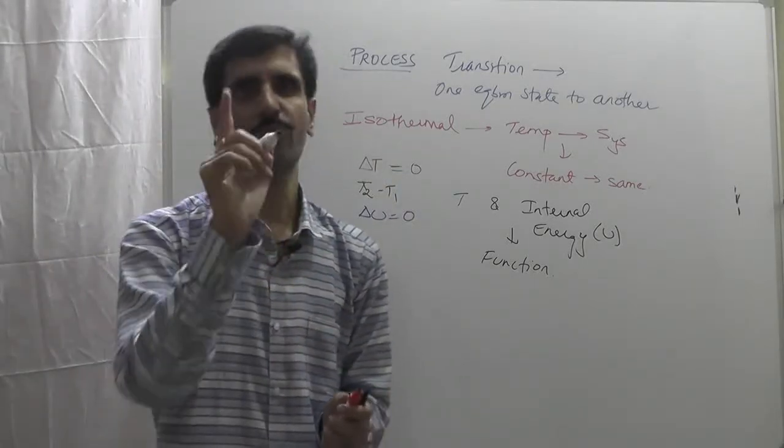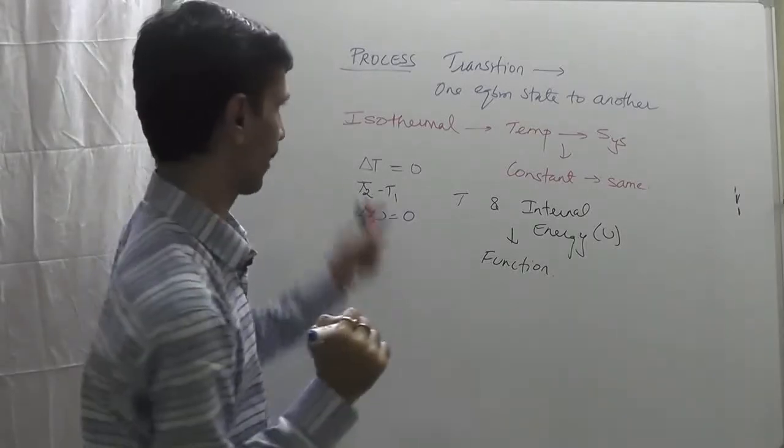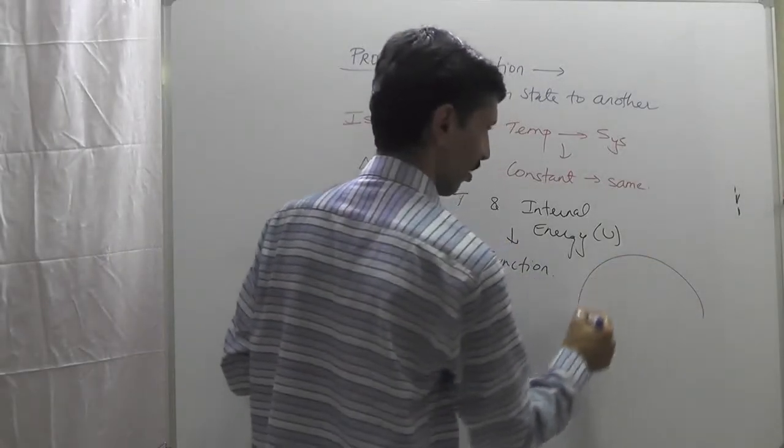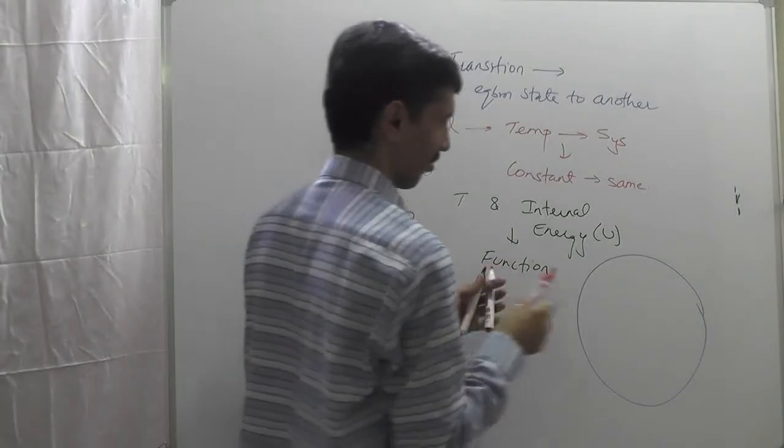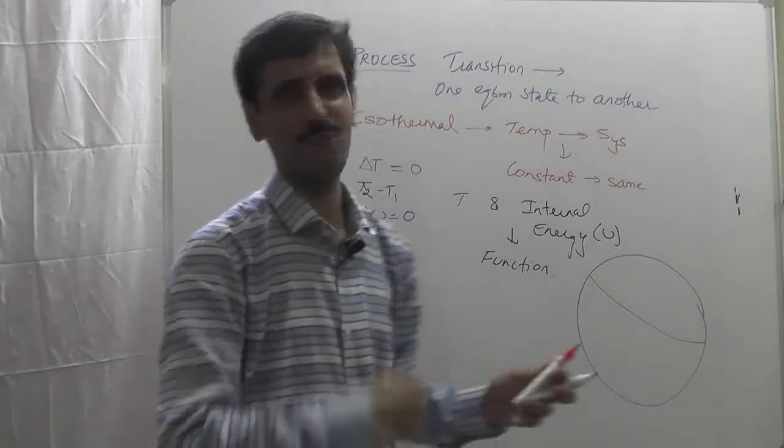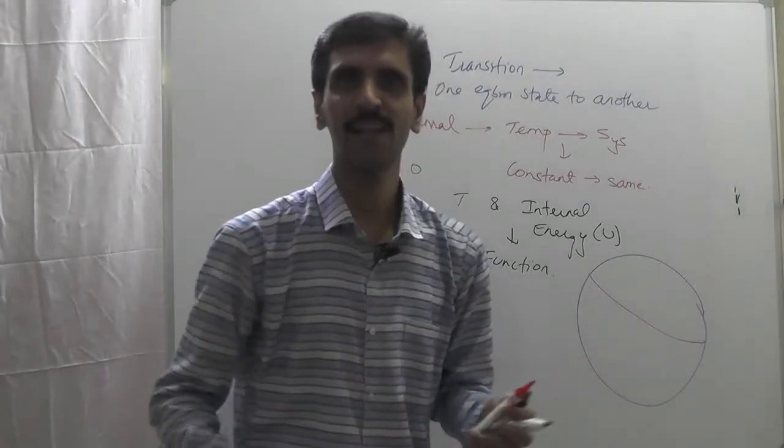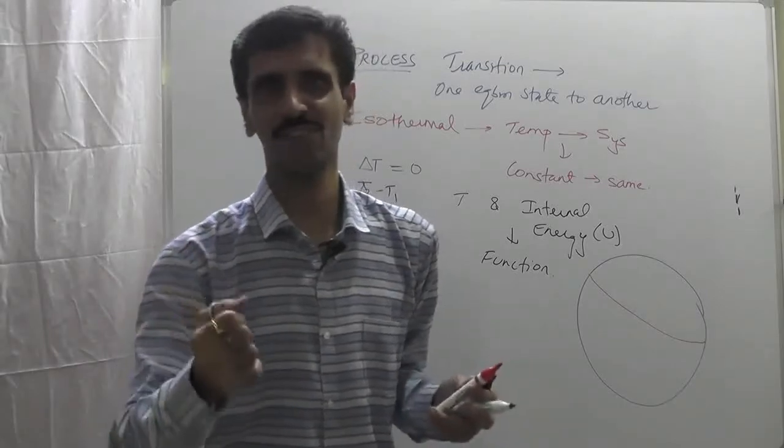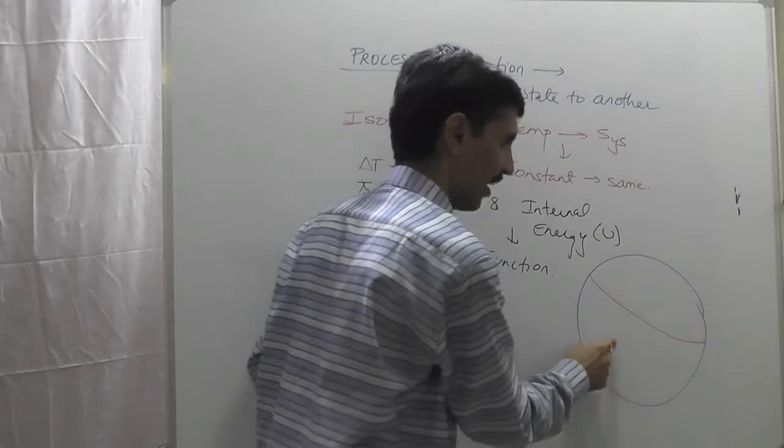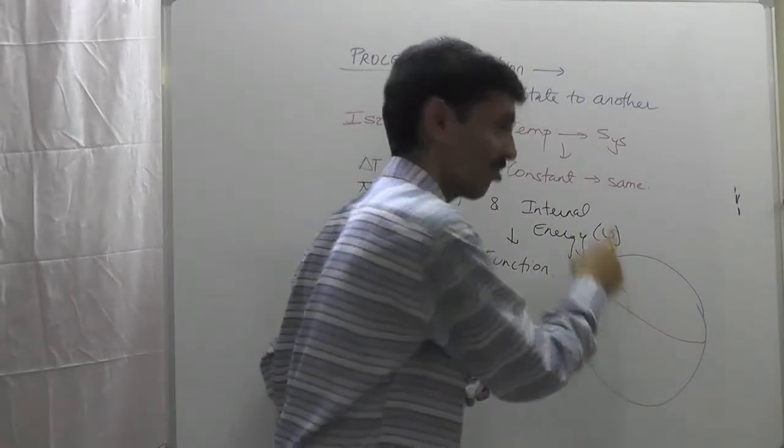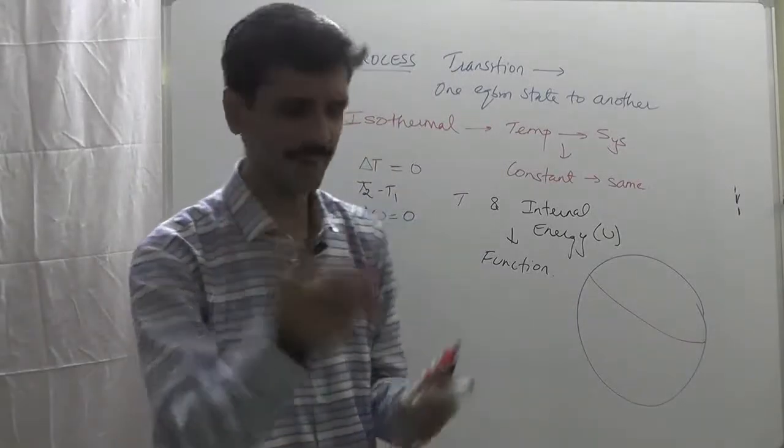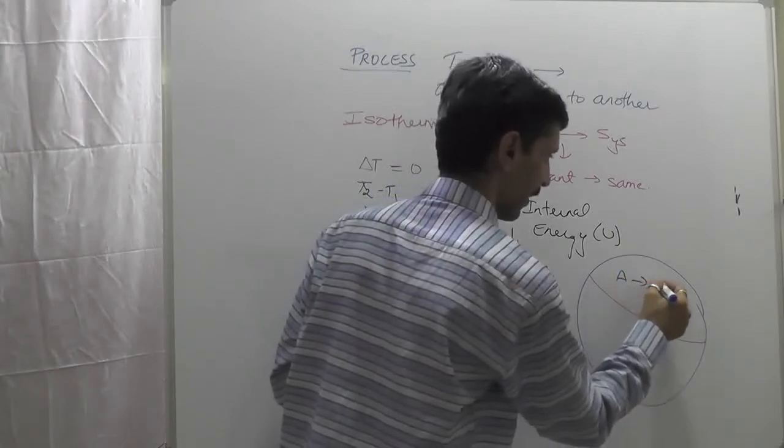Understood this part? Fantastic. Also I want to explain one more concept with respect to isothermal process. I'll draw a diagram - see whether you can recollect this. In the previous part of this chapter I already explained this. Yes, very intelligent students - this is universe, this red line is the boundary, this is a closed system, this is the surrounding.